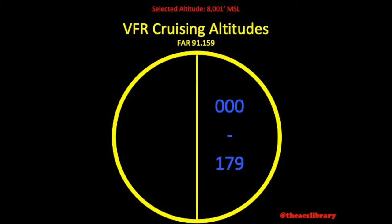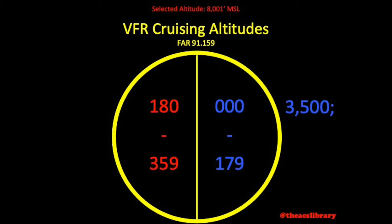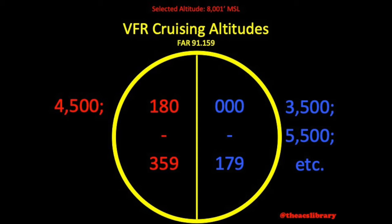We will take the 360-degree compass and split it in half: headings 000 or 360 through 179 on the right, and 180 through 359 on the left. If our desired magnetic course falls within the range to the right, the pilot must maintain an odd thousand altitude plus 500 feet — for instance, 3,500 feet, 5,500 feet, and so on. For headings to the left, pilots must maintain altitudes of even thousand plus 500: 4,500 feet, 6,500 feet, etc.